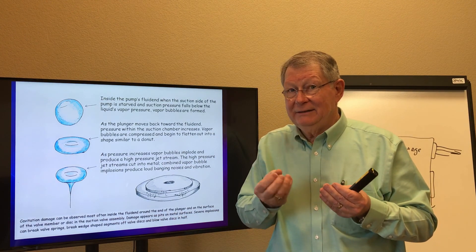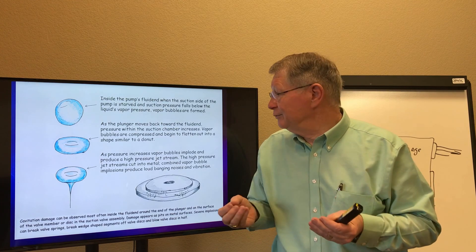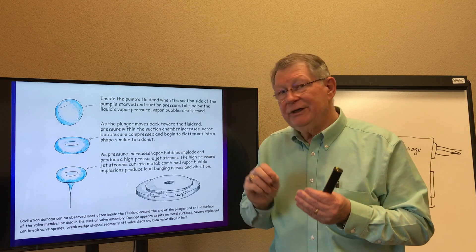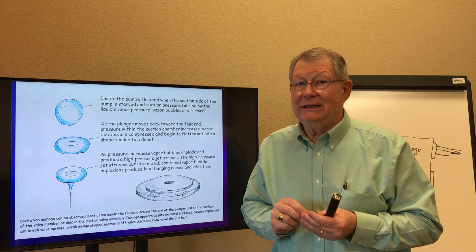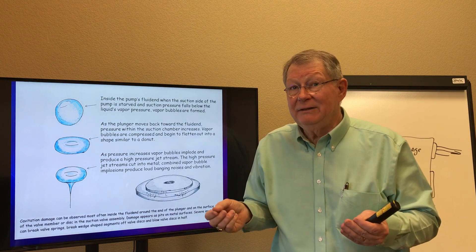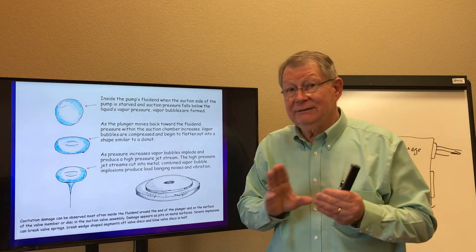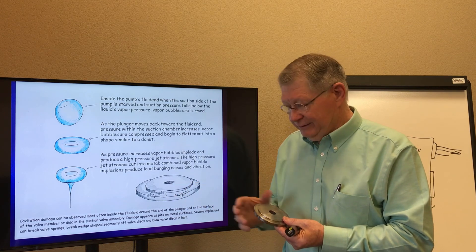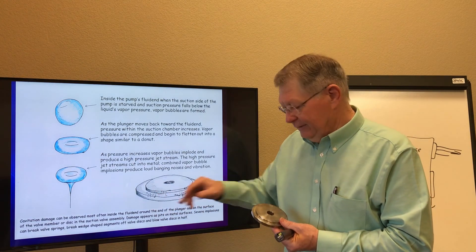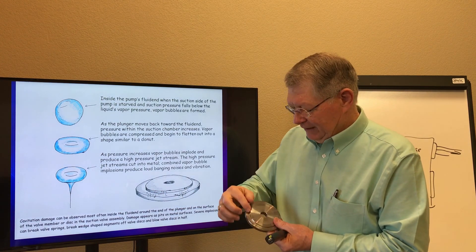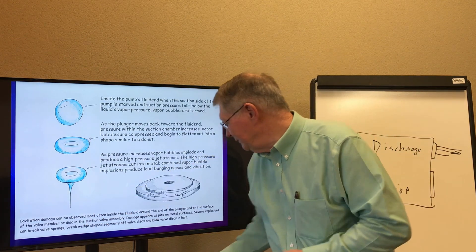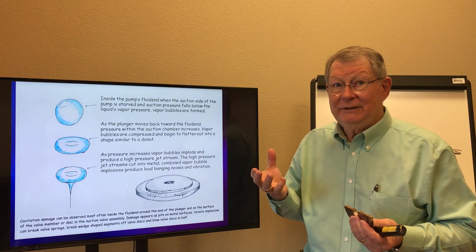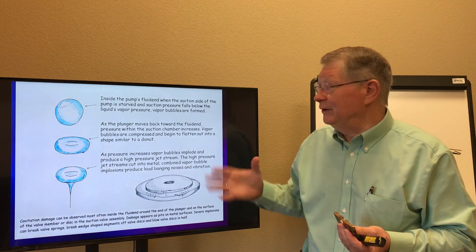Think about this — we're talking about many thousands of vapor bubbles forming during this process. As they implode, they create a high-pressure stream of water. This water is at very high pressure and it cuts metal — like a CNC water jet that can cut through three, four, five, or six inches of metal very easily. Cavitation does the same thing and is terribly destructive. You get the noise — the bing, pop, bang — and the vibration from these implosions inside the pump.